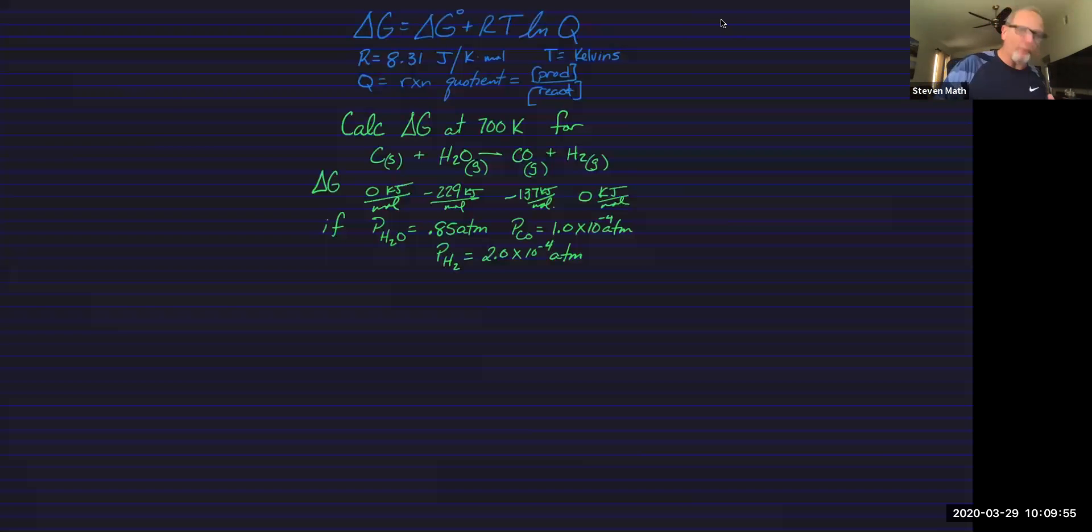Our problem is very straightforward. It says calculate delta G at 700 K for this reaction. We're going to take some carbon, solid graphite, throw it into water vapor, and see if we can get carbon monoxide and H2 gas. Now I'm not going to lie to you. We have delta G here under standard conditions, 25 degrees, one atmosphere of pressure. And then we have the new pressures that we're going to be given. So let's take a look at what happens with this.